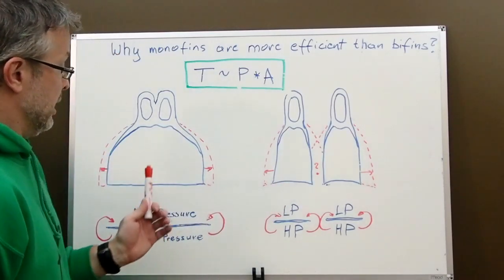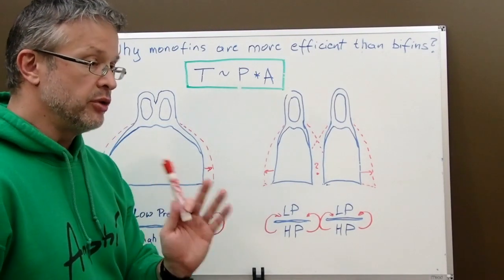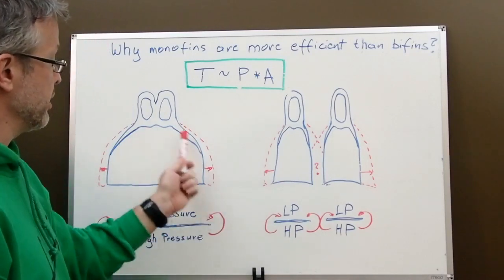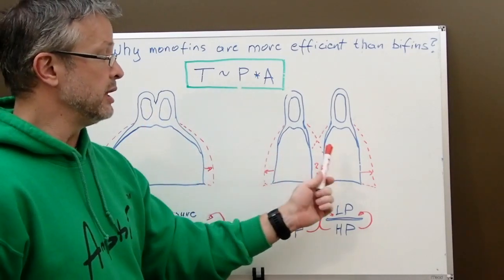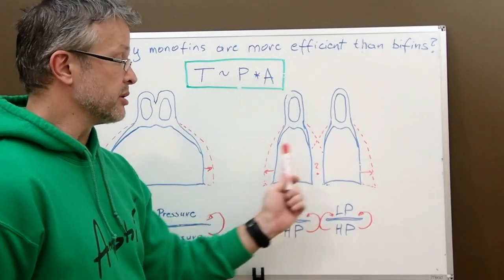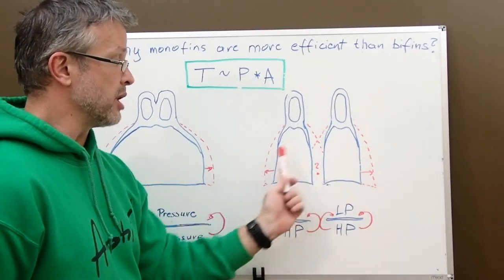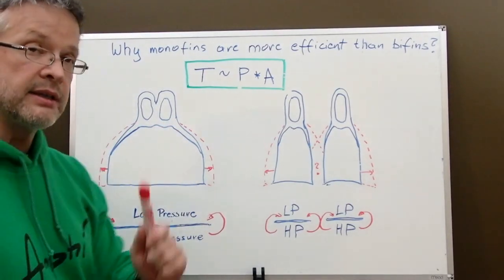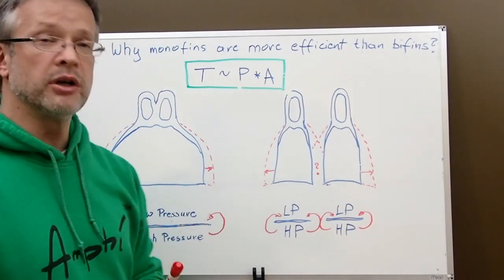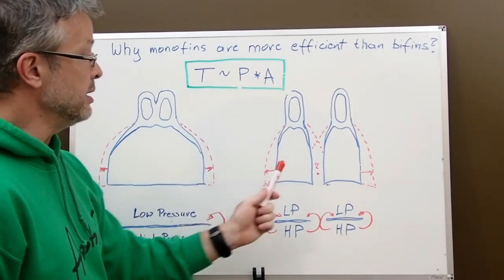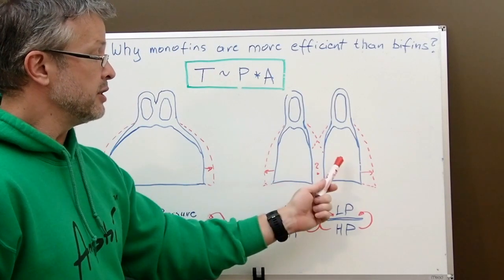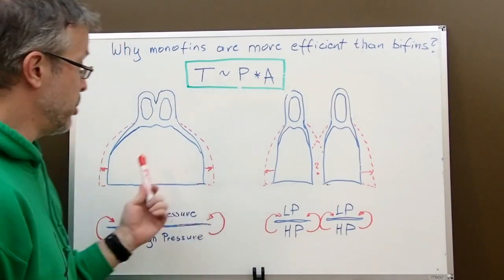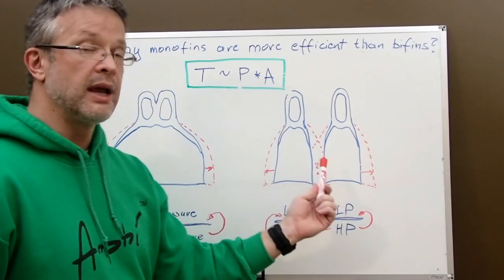Now let's talk about two situations where the areas are the same. Everything is equal so the area of the monofin is equal to the sum of the areas of those two fins. So when we add those areas together we're going to end up with the same surface area. Let's assume also that pressure differential is equal. So P here, the difference between the top side and the bottom side, is equal initially. Let's assume that for both cases, the monofin and the bifins.